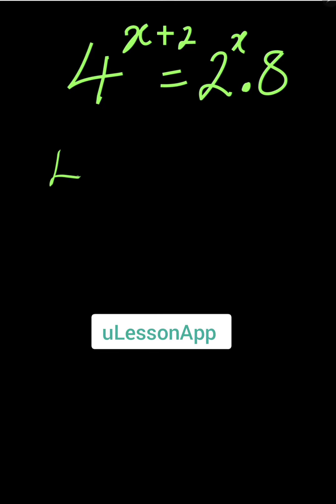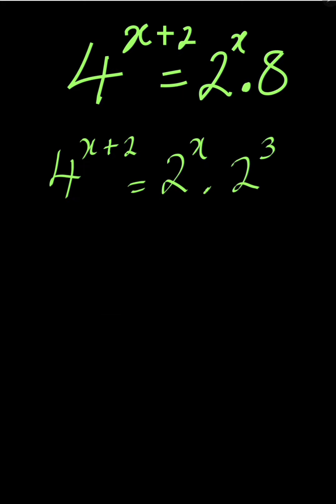So we have 4 to the power of x plus 2 is equal to 2 to the power of x multiplied by 8. That 8 can be written as 2 to the power of 3 because 2 times 2 times 2 in 3 places will give us 8.